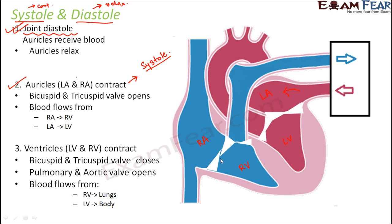When the auricles contract, the valve opens up and blood flows from the right auricle to the right ventricle. Similarly, when the left auricle contracts, the valve opens up and blood flows from the left auricle to the left ventricle. So the right auricle contracts, the valve opens, and blood flows to the right ventricle — and the same thing happens on the left side as well.